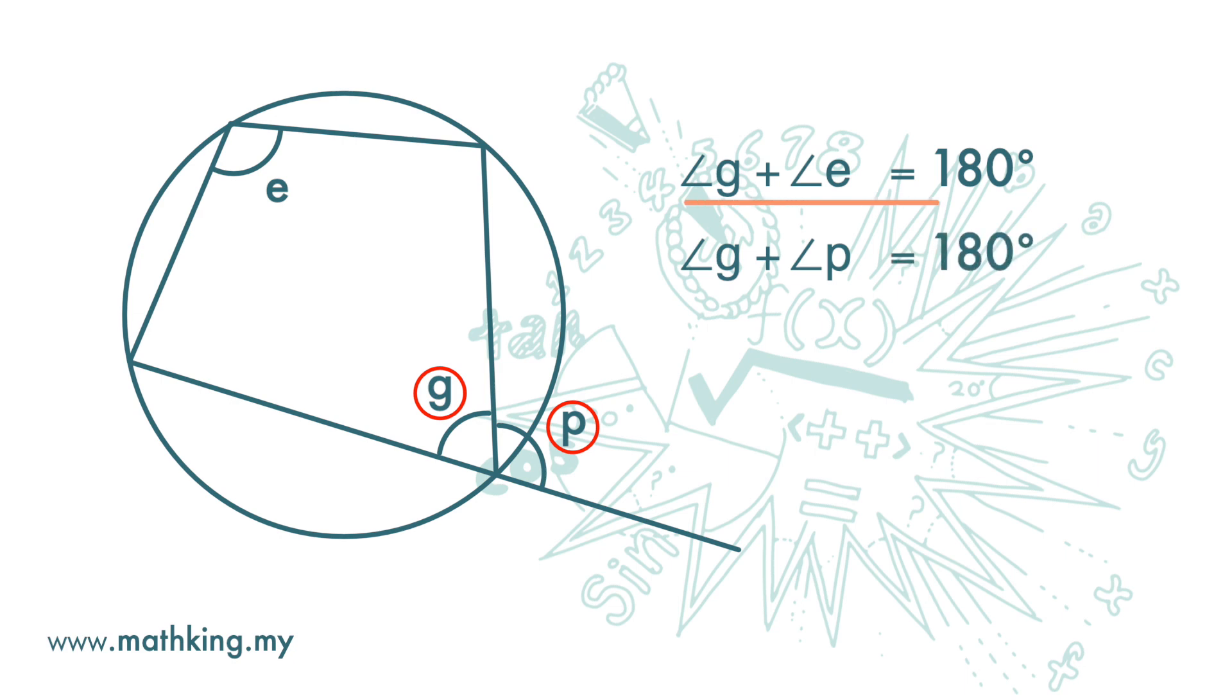Angle G plus angle E equals 180 degrees. Angle G plus angle P equals 180 degrees. So angle E must equal angle P.